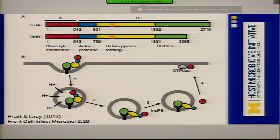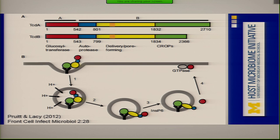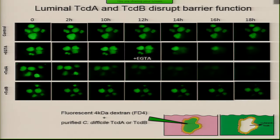Why were we interested in looking at barrier function? One of the first things we wanted to do was look at C. difficile. I mentioned that toxin production is key. Borden-Lacy has done beautiful work on the structure and function of these toxins. They are taken up by receptor-mediated endocytosis and eventually affect host GTPases such as Rho, RAC, and CDC42, which control the actin cytoskeleton. Presumably, one of the assays is cell rounding or loss of barrier function. So what would happen if we took one of these toxins and put it into the organoid?